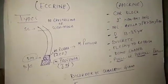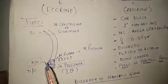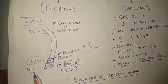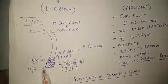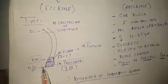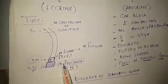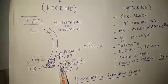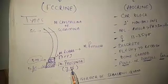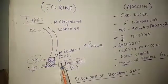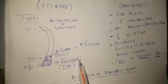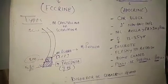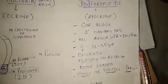When the ducts of the eccrine sweat glands are blocked in the region of the dermal-epidermal junction, the patient presents with itchy nodules, and the condition is called miliaria profunda.